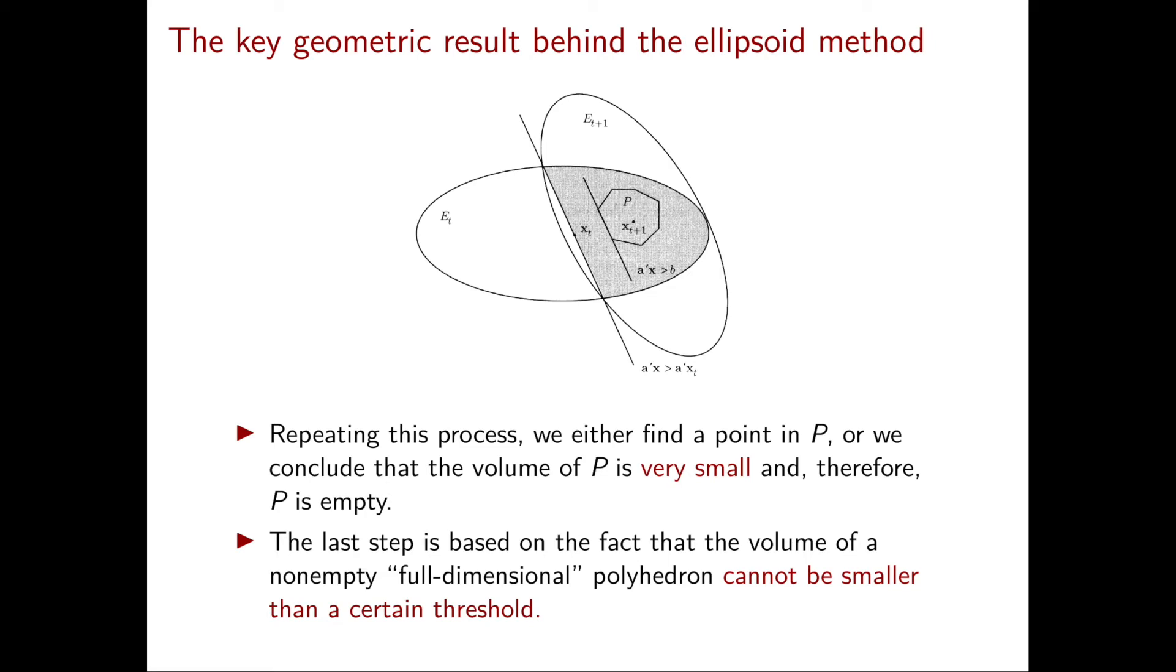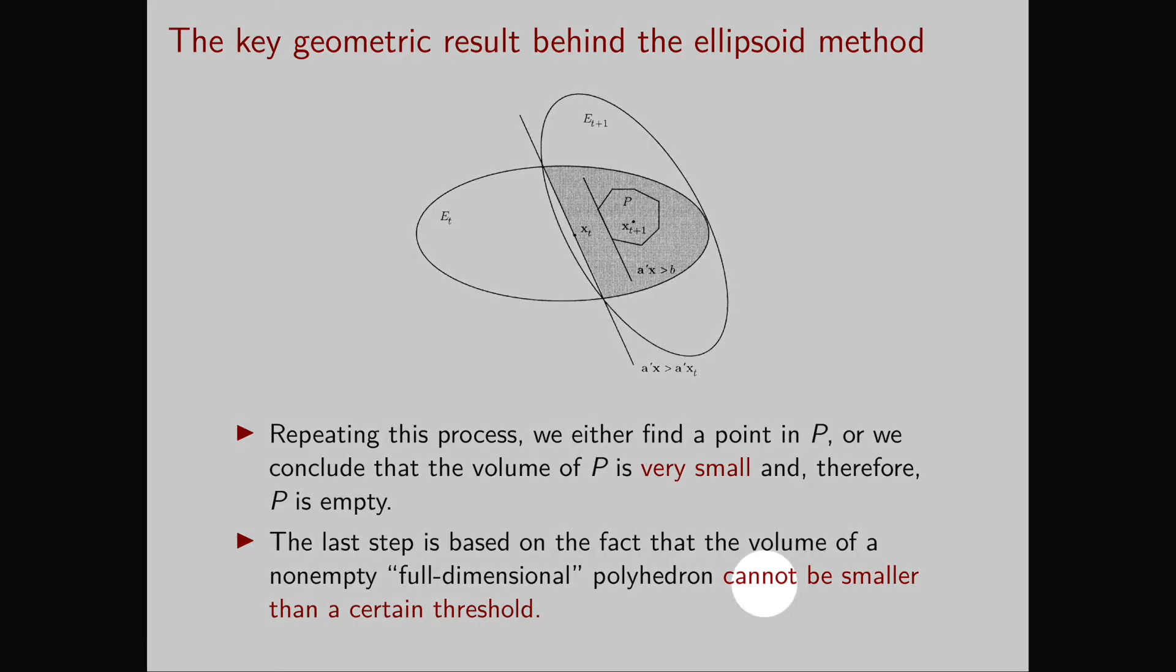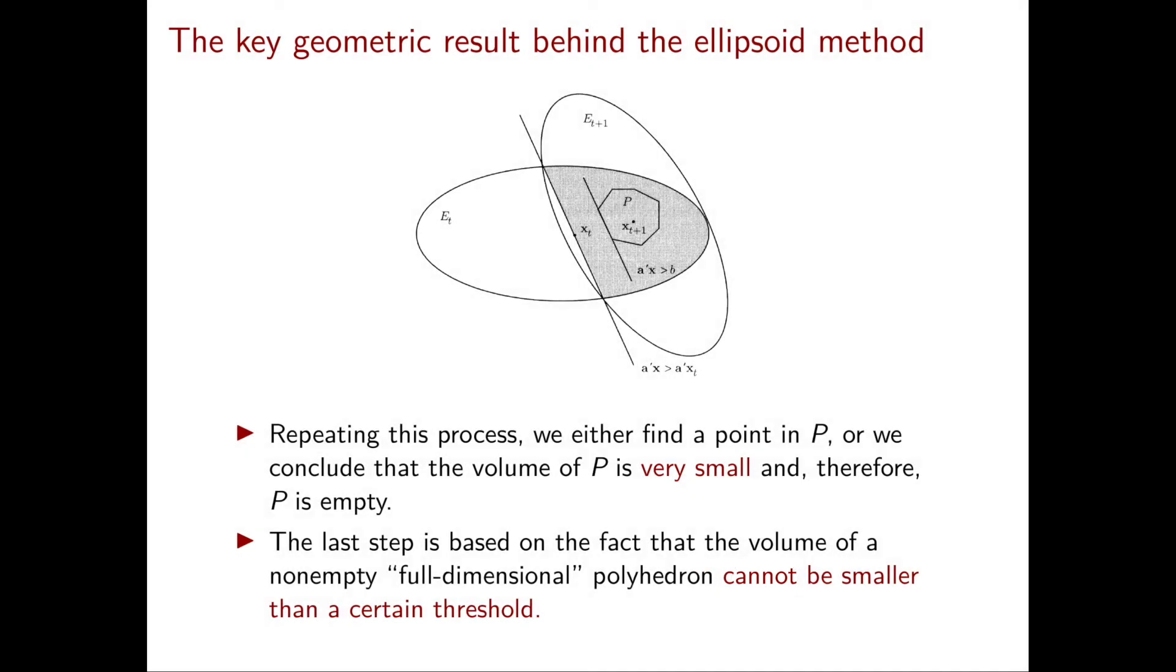This last step is perhaps the most surprising at this point. It is based on the fact that the volume of a non-empty full-dimensional polyhedron cannot be smaller than a certain threshold. So when the volume of our ellipsoid is below this threshold we can conclude that it cannot contain any non-empty polyhedron.